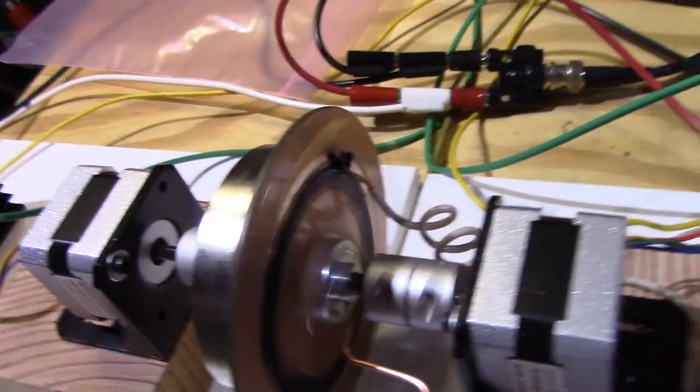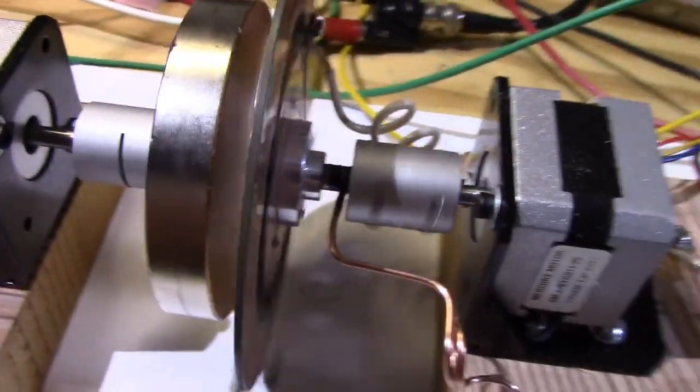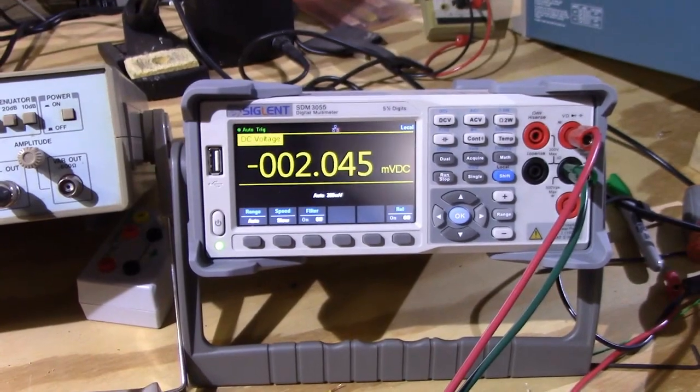One of the brushes is at about the diameter of the magnet. The other brush goes to the center shaft of the rotor, and the brushes go off to the signal meter which is reading about two millivolts right now.